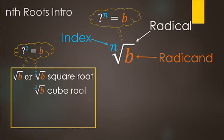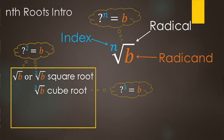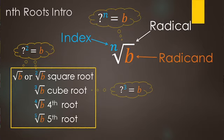One that might be new to you is the index of three — the third root of B, or the cube root of B. That means three of what number being multiplied equals B, or three factors of what equals B. The square root and cube root have special names. Anything above that, like a fourth root, we just call it fourth root — it doesn't have a special name.